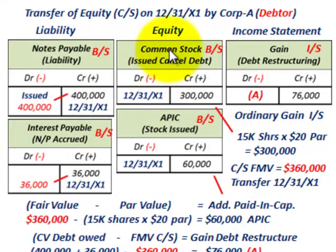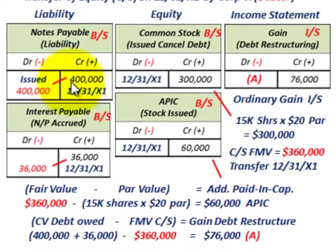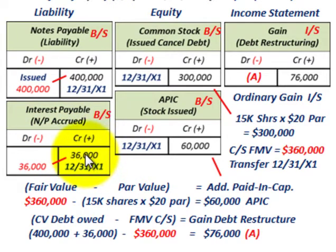Corporation A will set up equity accounts and add to their common stock accounts because they're issuing more common stock to pay off the debt. They will also recognize a gain on debt restructuring on the income statement. For notes payable, they had a credit of $400,000 when it was issued; now they debit it for $400,000 to write it off. Same with interest payable — they had a credit of $36,000 accrued, and now they debit it to write it off.